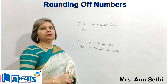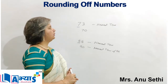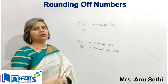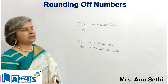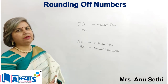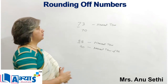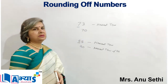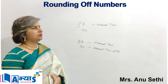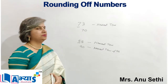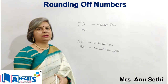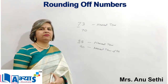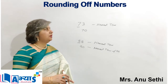When rounding a number to the nearest tens, we take the units digit and check its value. If the value is less than 5, the tens place will remain as it is. If it is more than 5, the tens place will be increased by 1, or we can say we will add 1 to the tens place.